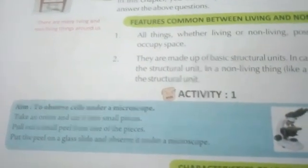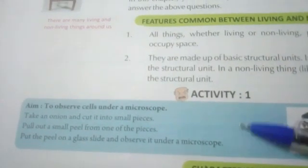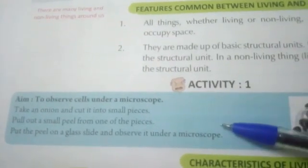Now see the activity in your book. The aim of this activity is to observe a cell under a microscope. The cell is the basic structural unit of living things. For this activity we take an onion — onion is a plant, and plants are categorized as living things.